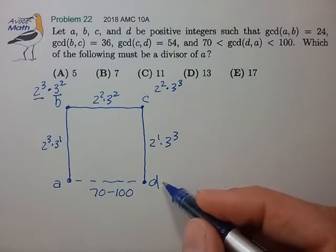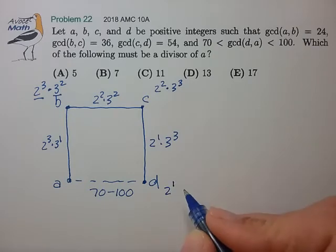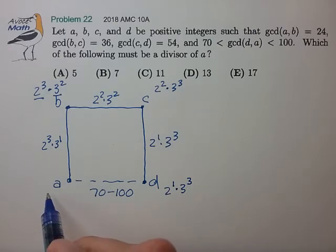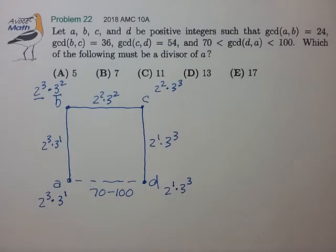And A has to have a factor of 2 to the first at least and 3 to the first at least.